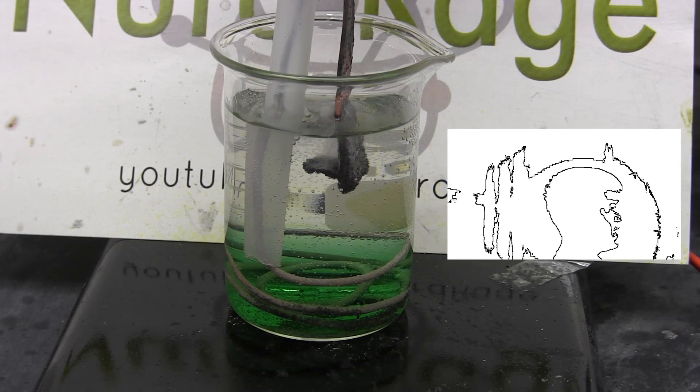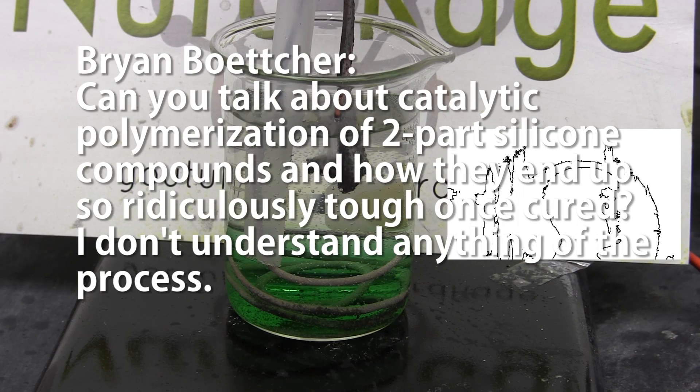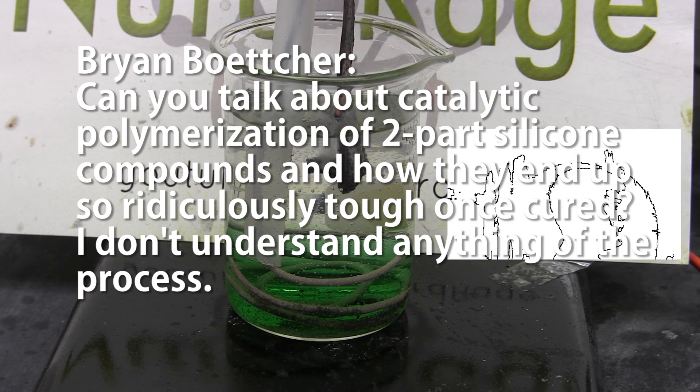So let's get to the questions, there are a lot of them this time and this will take a while. So first question, Brian Botcher asks, can you talk about the catalytic polymerization of two-part silicone compounds and how they end up so ridiculously tough once cured?